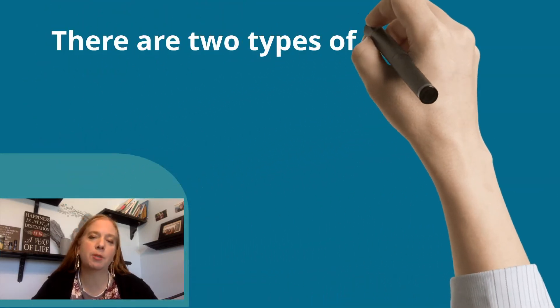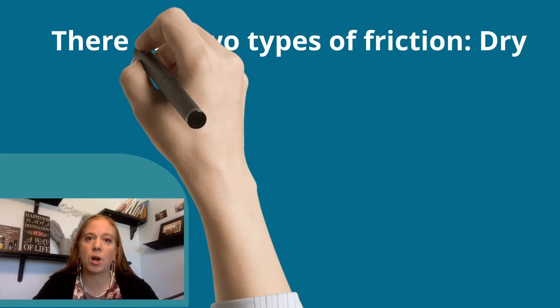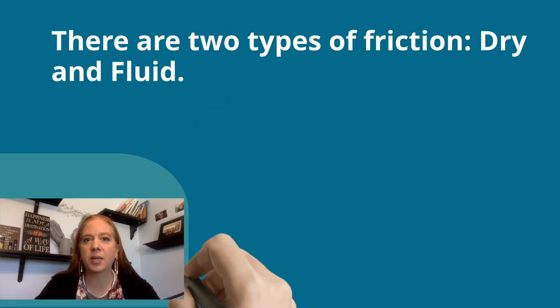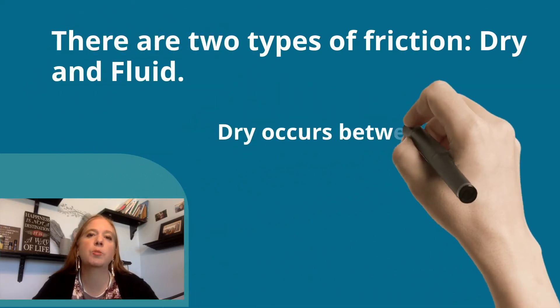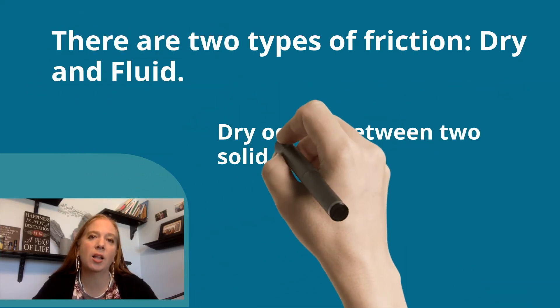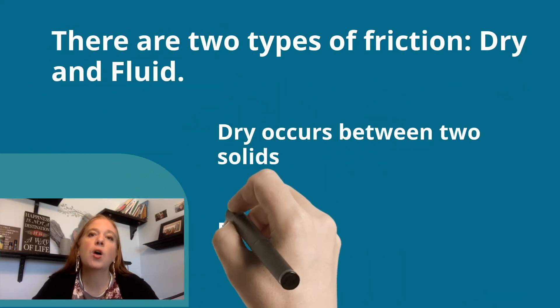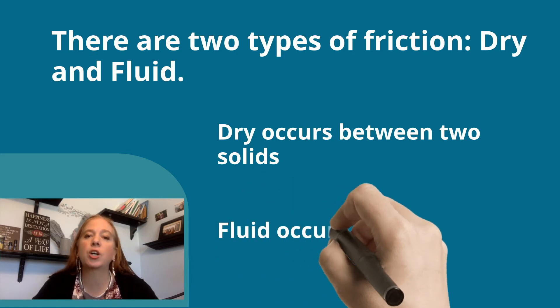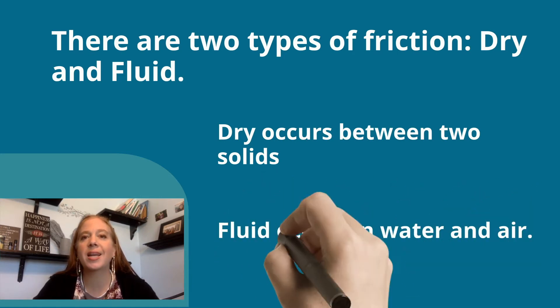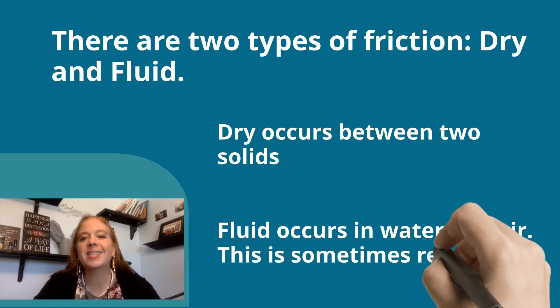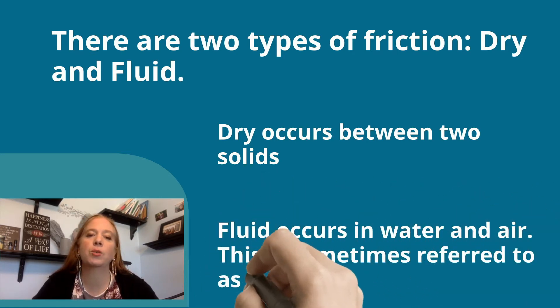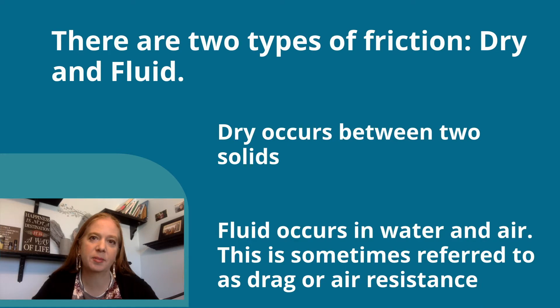There are two types of friction: dry and fluid. Dry occurs between two solids. Fluid occurs in water and air. This is sometimes referred to as drag or air resistance.